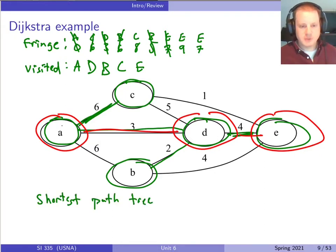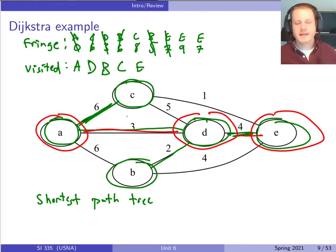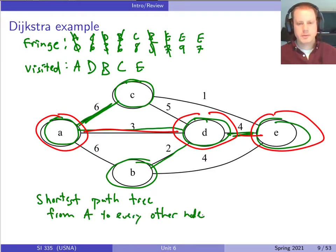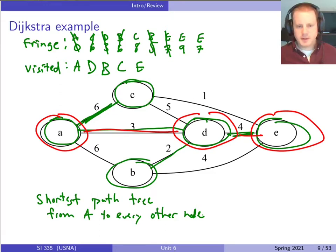I should point out that we actually get the shortest paths from A to everywhere else in the whole graph. What we really get out of this — shown in green — is called the shortest path tree. It's a tree starting at A, and if we let this run until every node gets visited, it gives us the shortest path from A to every other node.